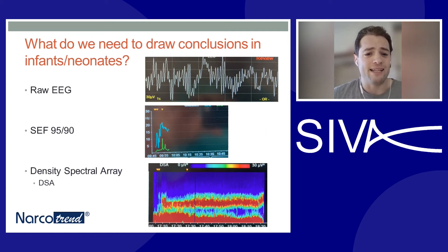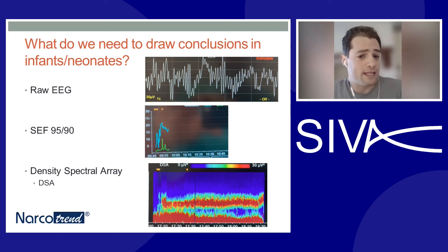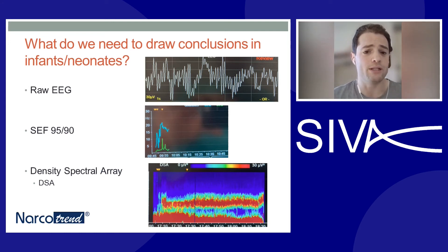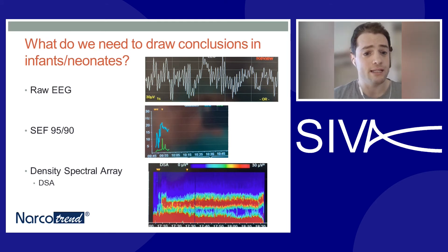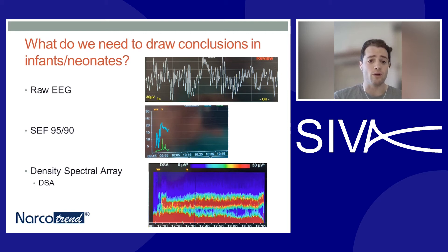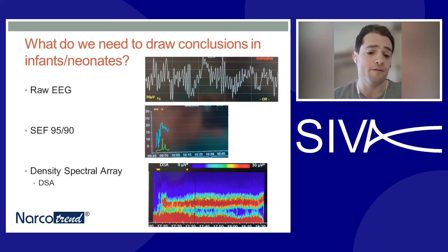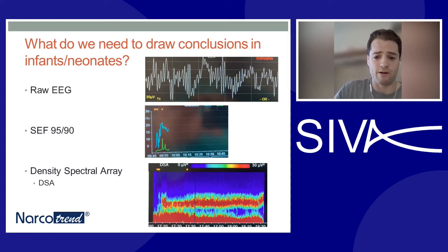Given that infants and neonates have these unusual changes, what do we need to draw meaningful conclusions in this cohort? We need access to three key things: first, the raw EEG; second, the spectral edge frequency 95 or 90, depending on which device you're using; and finally, the density spectral array, or DSA. All of those are represented on the right-hand side of the display.